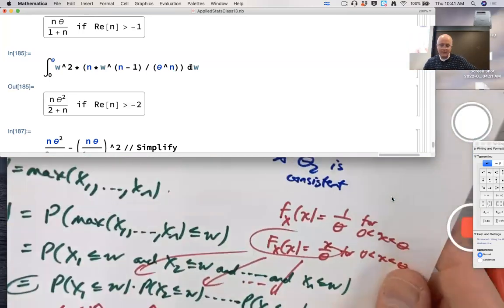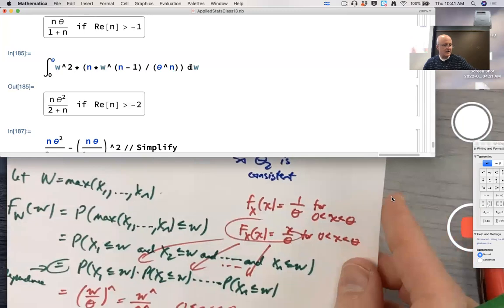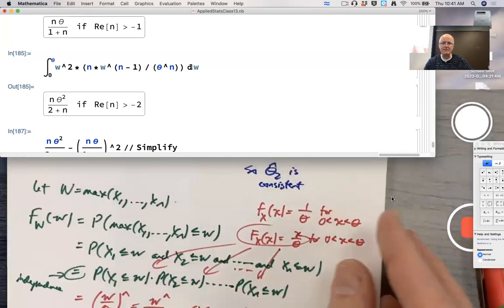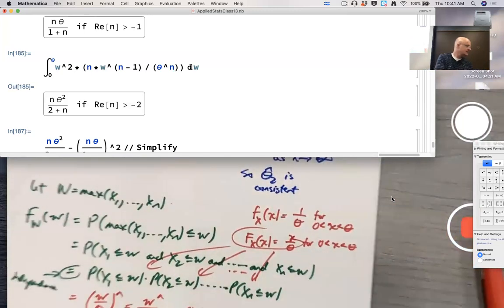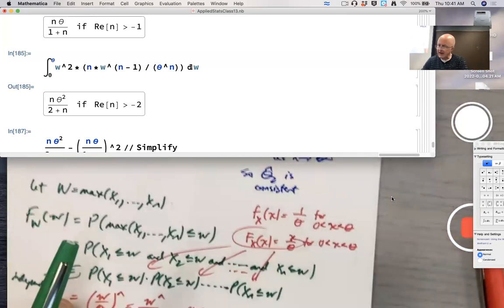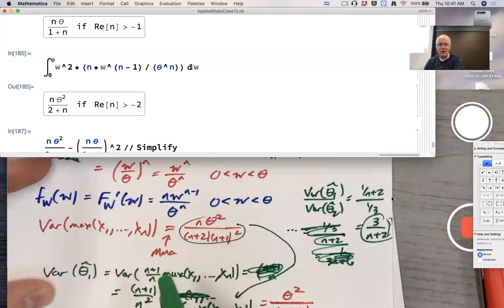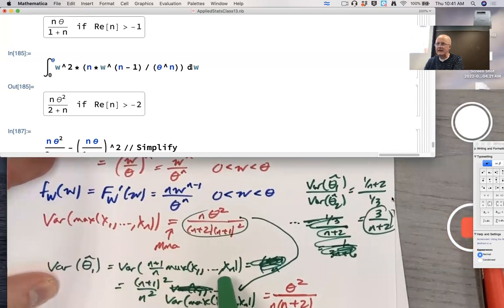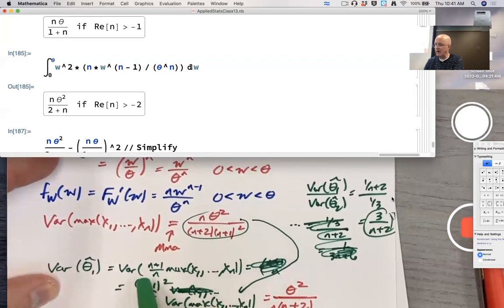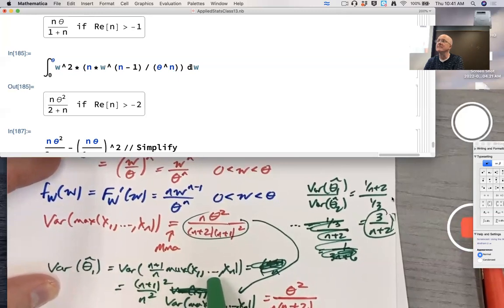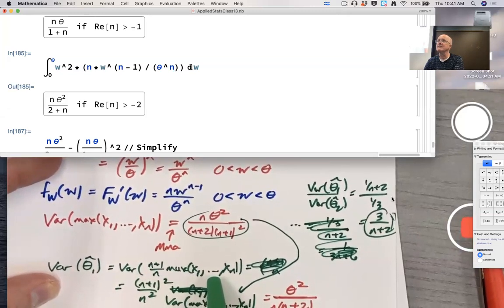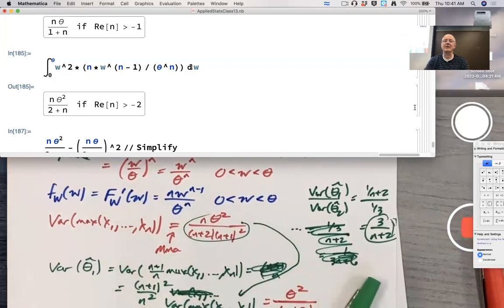They're both unbiased and one is more relatively efficient. Where did I put the paperwork? Theta 1 hat was n plus 1 over n times the maximum, theta 2 hat was 2 times x bar. N plus 1 over n times the maximum is better, is what this means. All right, have a good day.